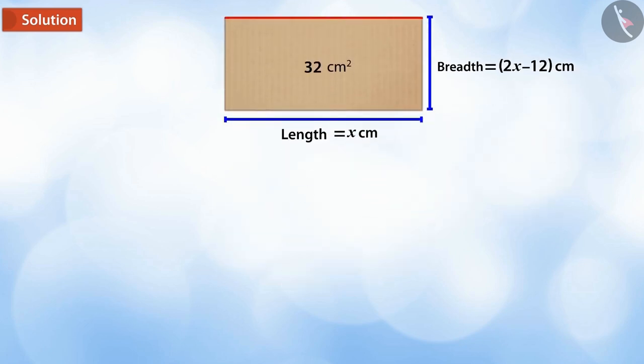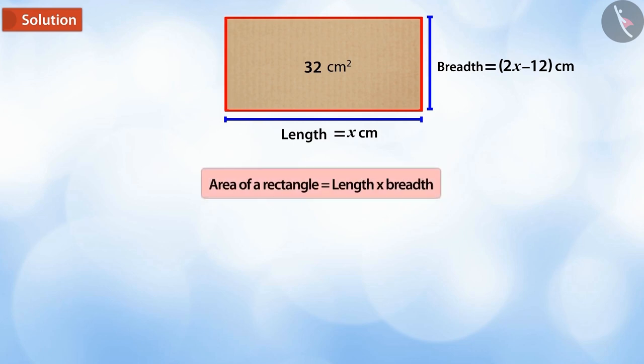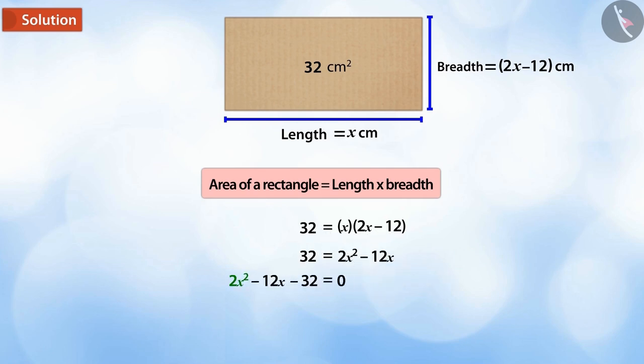We know that, since the box is rectangular, we can use the formula for area of rectangle. Here, the area of the box given is equal to 32 square cm. Putting all the above values in the formula of area, we get 2x² minus 12x minus 32 is equal to 0.